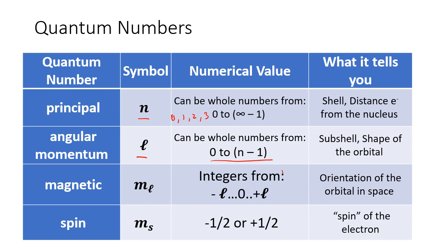The third quantum number is called the magnetic quantum number, with symbol m_l. It directly depends on l and can be integers ranging from negative l through zero up to positive l. For example, if l equals 1, the possible m_l values would be −1, 0, and +1. The m_l tells us the orientation of the orbitals in 3D space — having three values tells us each orbital lies along one of the x, y, or z axes.